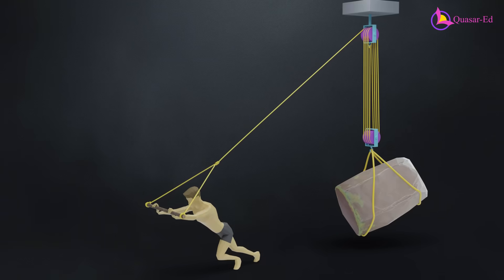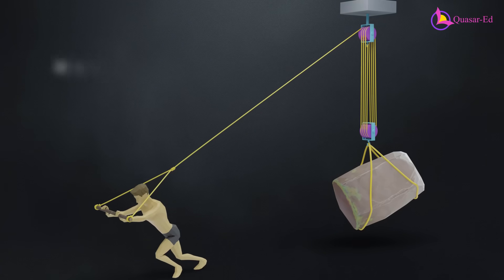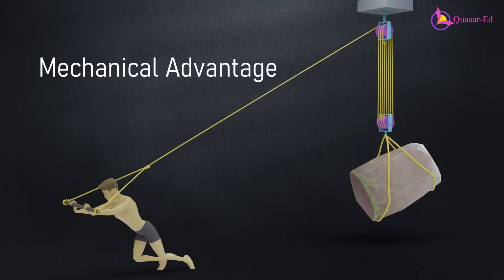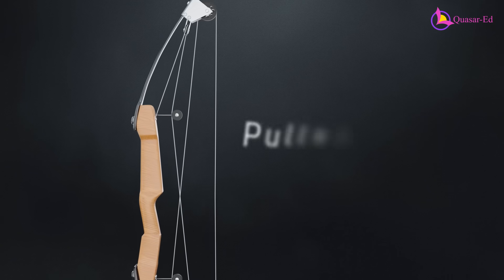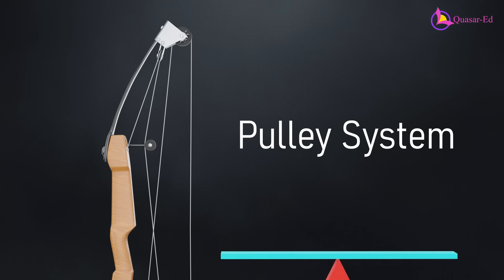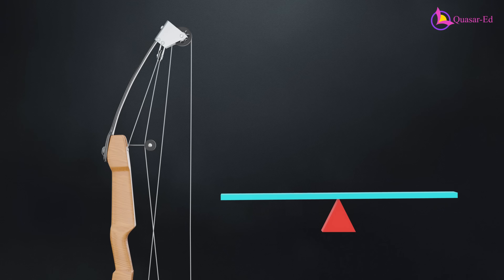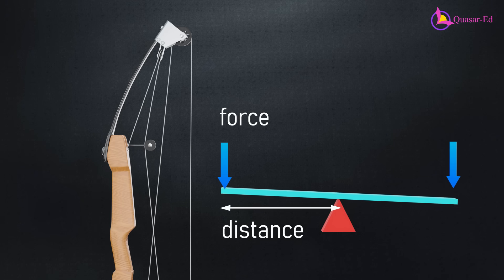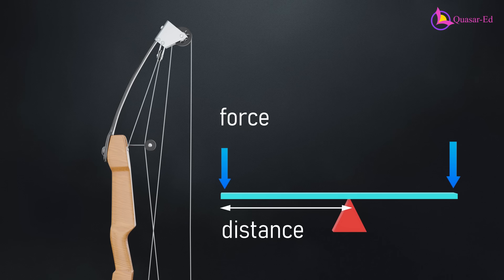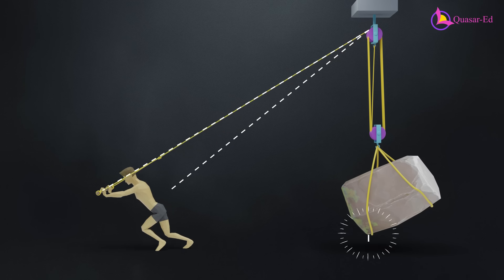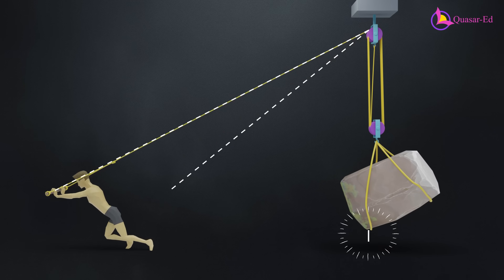Every time a small force is used to control a larger force, mechanical advantage is at play. The first compound bow achieved this advantage through a pulley system. Mechanical advantage often involves a trade-off between force and distance, meaning that by increasing the distance over which force is applied, we can reduce the amount of effort needed. A simple pulley system allows us to apply less force by pulling the string over a greater distance.